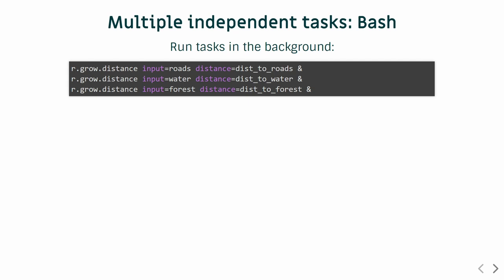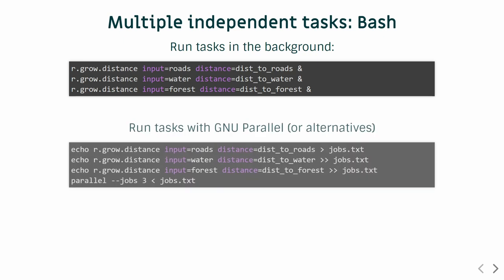Similarly, in Bash you can do it even more simply. On a Unix system, you can use the ampersand to send a process into the background and do it for a couple of processes. If you have really a lot of these calls, you can generate them or write them into a file and then execute the file using GNU parallel or other alternatives.